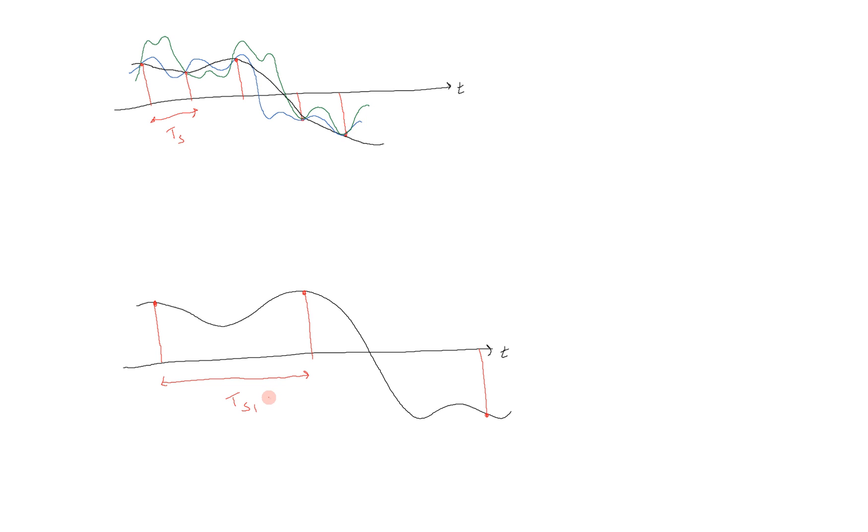Now we can see that the smoothest possible signal that we might choose to reconstruct it here is probably not going to be the black one. It's probably going to be something more like this dotted red signal right here. That is a smoother version of connecting these sample dots than the black one.